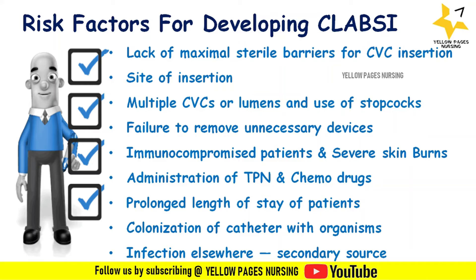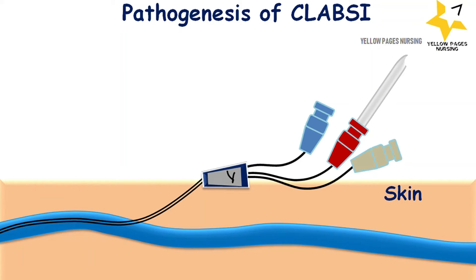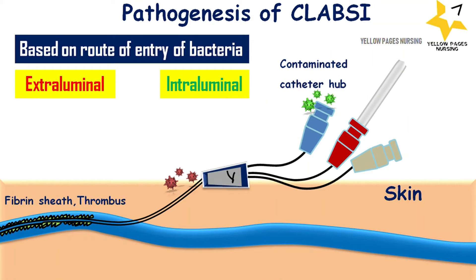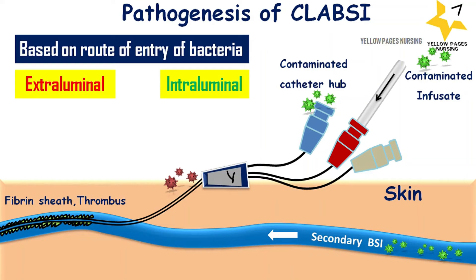The pathogenesis of CLABSI, based on route of entry, is classified as extraluminal and intraluminal. In extraluminal entry, pathogens migrate along the external surface of the catheter from the skin entry site — this often occurs within seven days of insertion. In intraluminal entry, the hub gets contaminated and organisms migrate along the internal surface, more commonly occurring after seven days, potentially leading to fibrin sheet formation. Secondary bloodstream infection occurs when bacteria from another source infects the blood, and contaminated infusate introduces pathogens through fluids infused through the catheter.